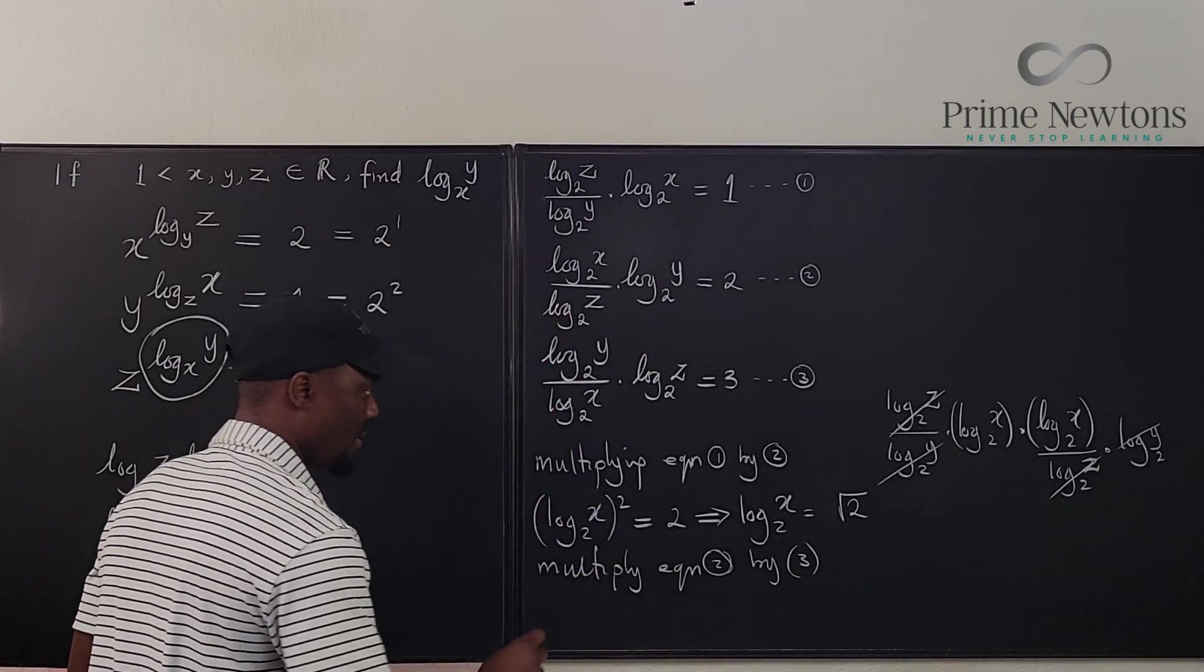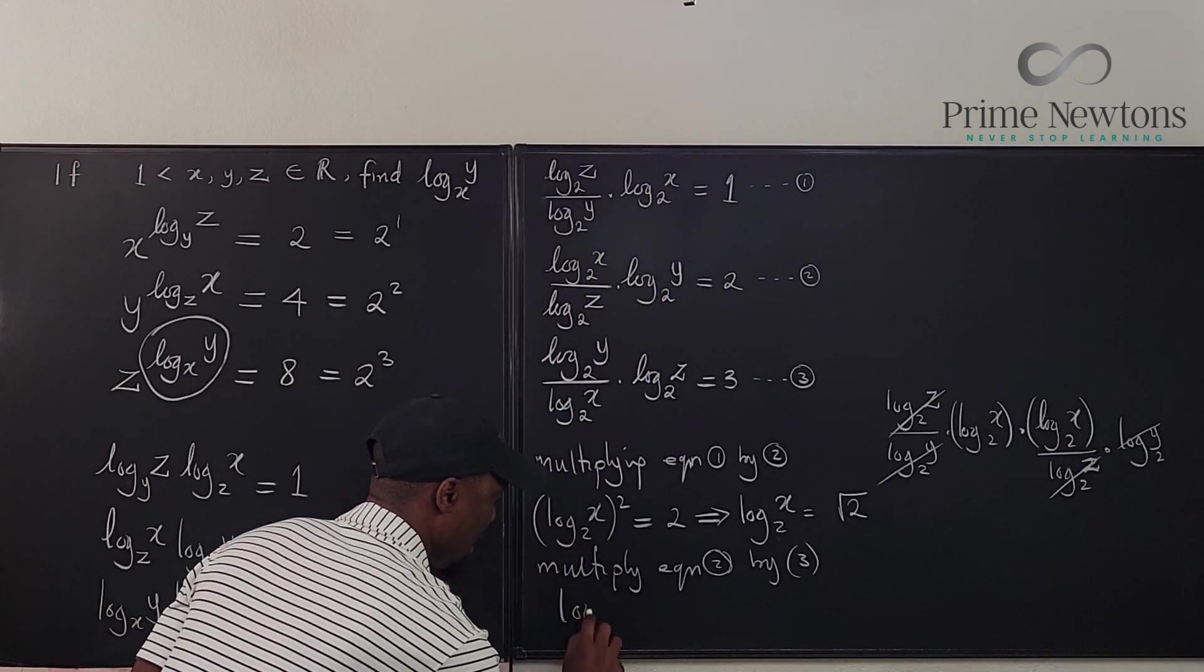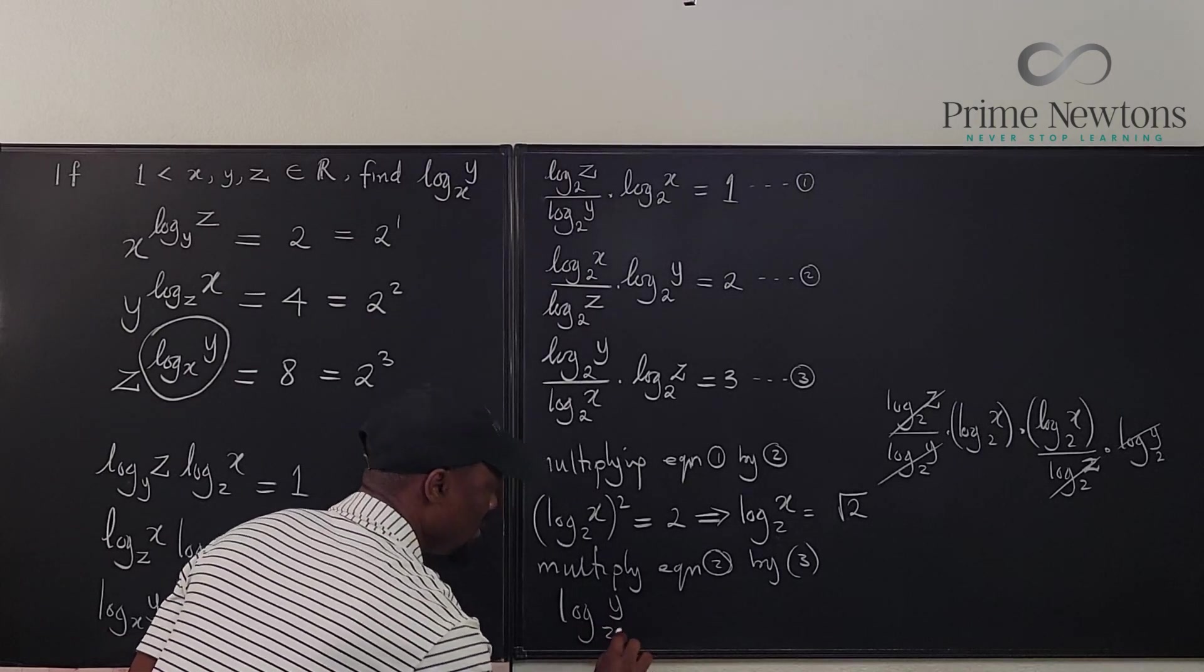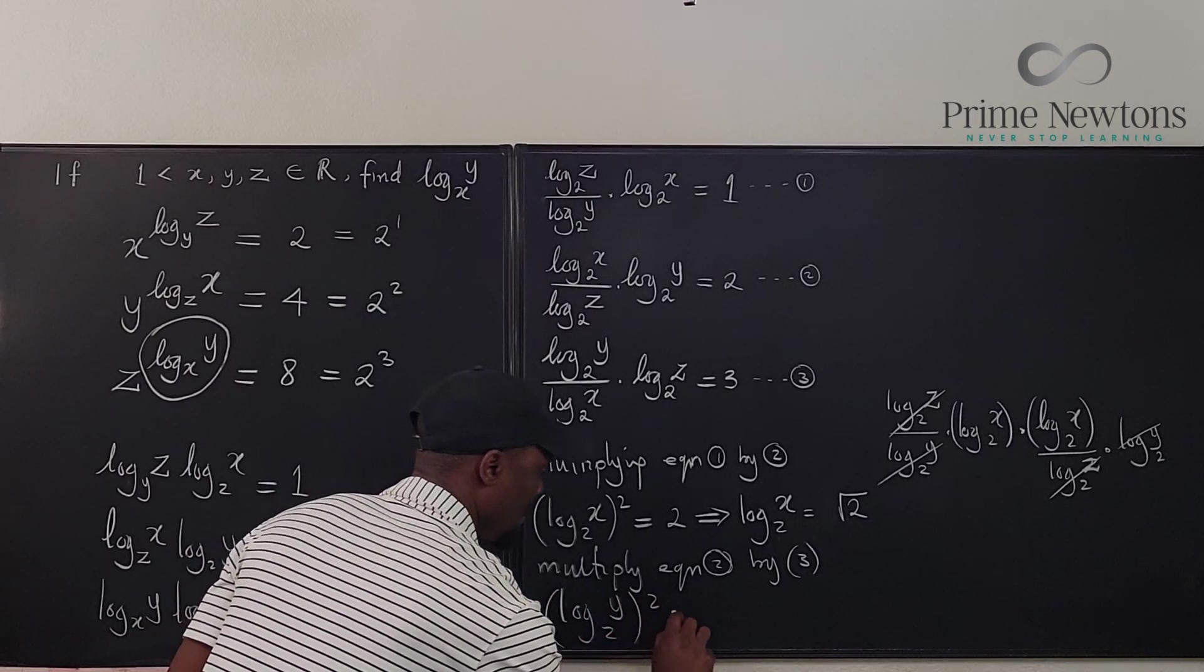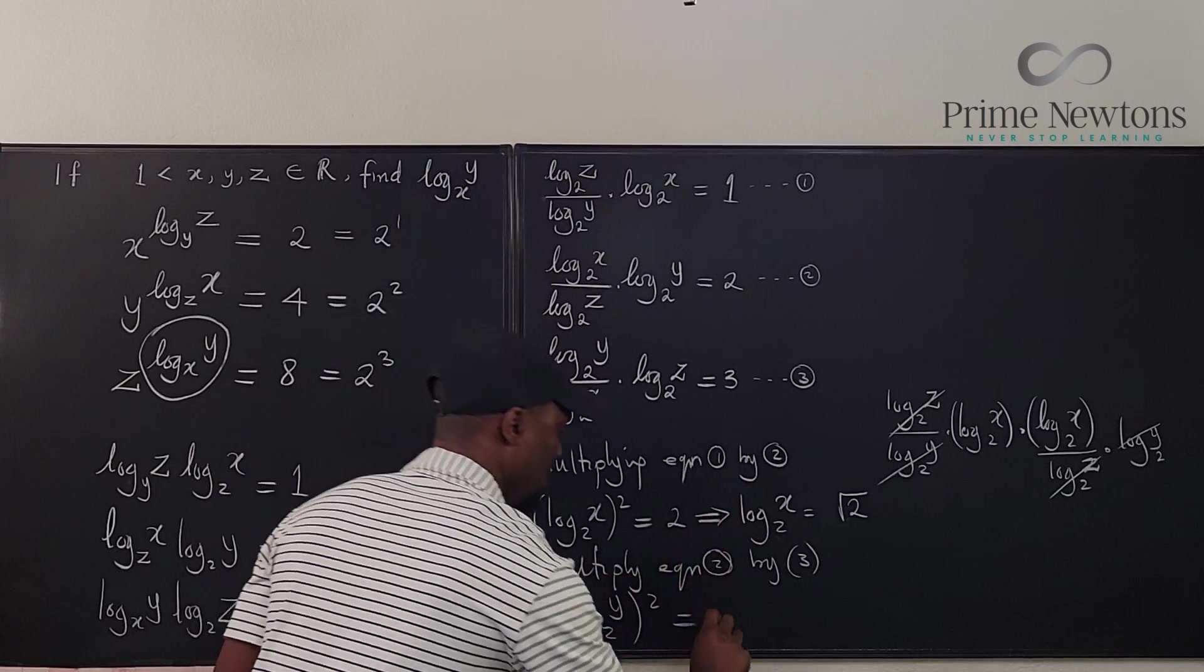We know that this is on top, it's going to cancel this one under. And these two are on top. So we're going to get the square of that just like this. We're going to get log y base two squared will be equal to the product of these two, which is six.